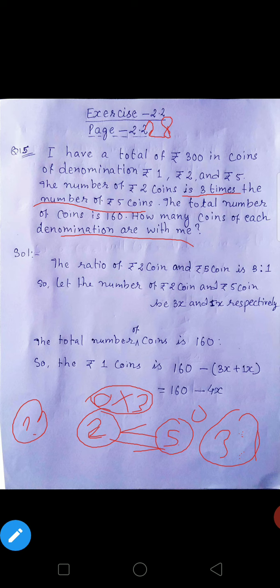The total number of coins is 160. How many coins of each denomination are with me? So 1 rupiah wala coins kitna hai, 2 rupiah wala coins kitna hai, or 5 rupiah wala coins kitna hai. So 2 rupiah or 5 rupiah coins ke beech mein ratio kitna hai? 3 is to 1.